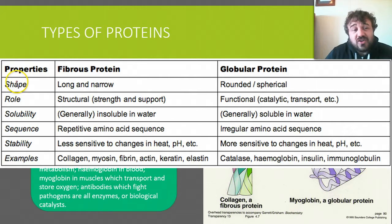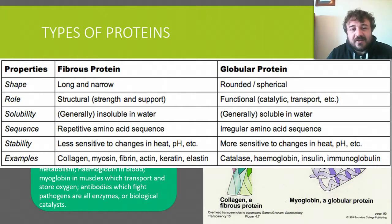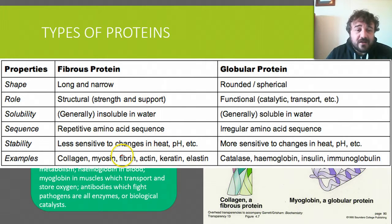Fibrous proteins are long and narrow in shape; globular proteins are rounded. Fibrous are structural; globular are functional. Fibrous are generally insoluble; globular are generally soluble. Fibrous tend to have a repetitive amino acid sequence — the same sequence over and over. Globular sequences are a bit more varied and irregular. You can heat up collagen and it doesn't tend to break apart, whereas if you heat up myoglobin it straightens out, stops working, and that's bad.